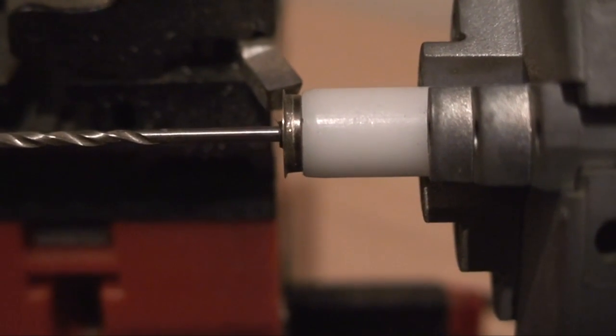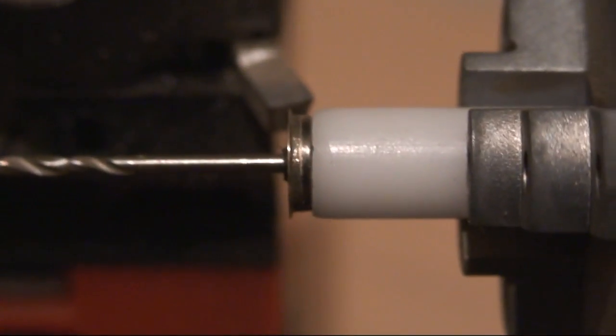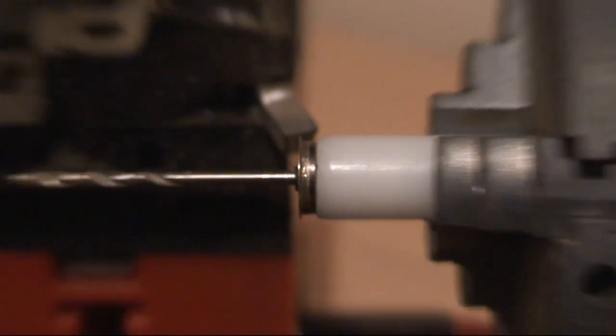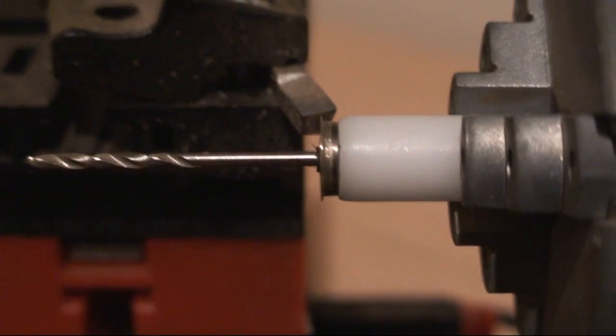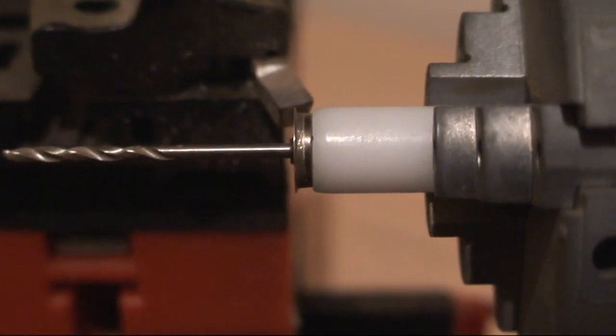Right, I've just done that and it turns out all I really need to do is hold the sanding block up to the edge because there's very little material to actually take off to get that to the right diameter.